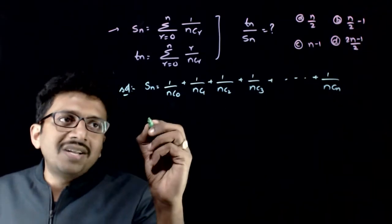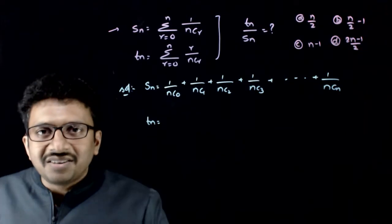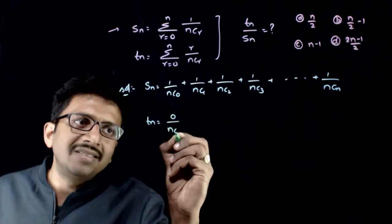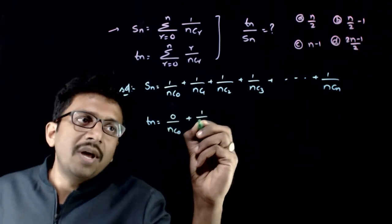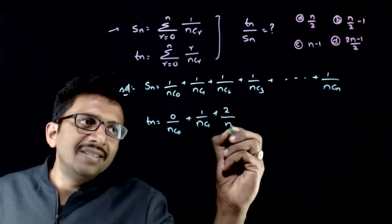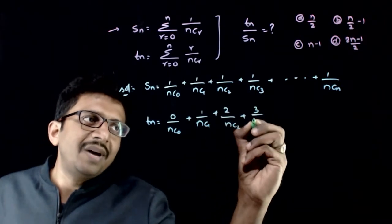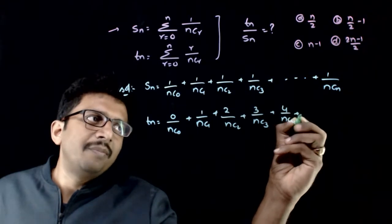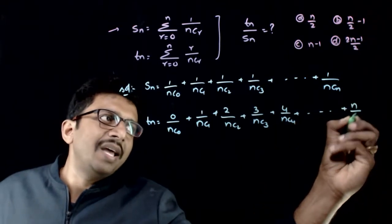And what is Tn? Tn is interesting. Tn is 0 by nC0 plus 1 by nC1 plus r equals 2, 2 by nC2 plus 3 by nC3 plus 4 by nC4 plus so on up to n by nCn.